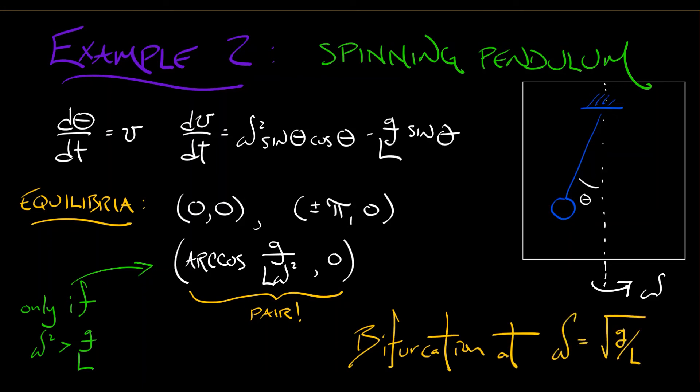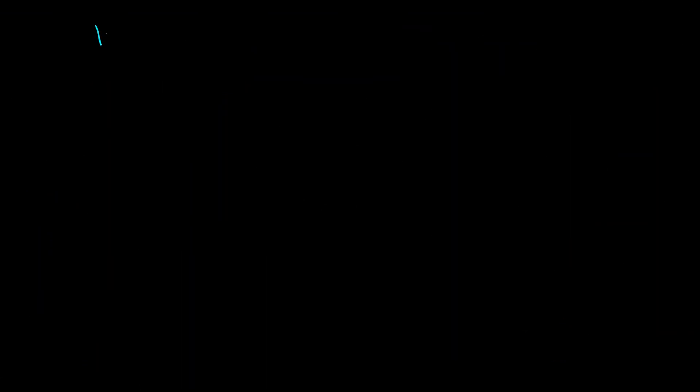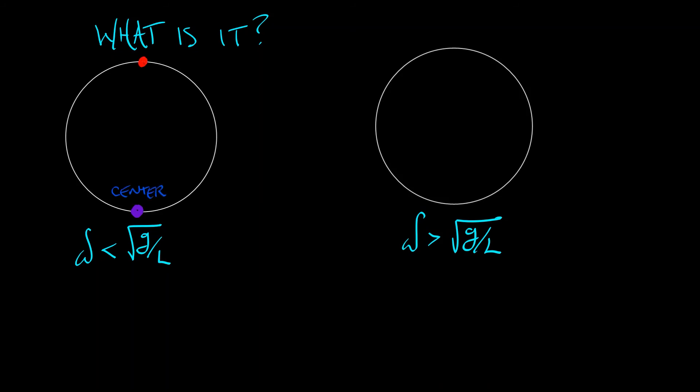This is really pointing towards a bifurcation at this critical rotation speed omega equals square root of g over l. Now as to what type of bifurcation this is, well let's investigate. Let's see what happens in the first case where omega is less than square root of g over l. I just have two equilibria: at the bottom I have a center, at the top I have a saddle, and that's it.